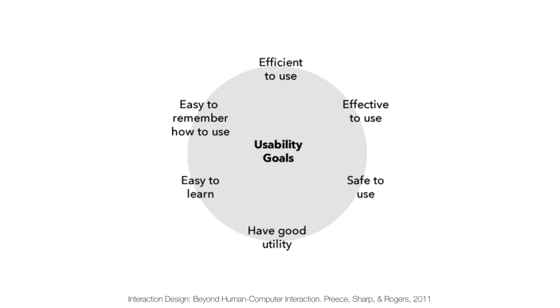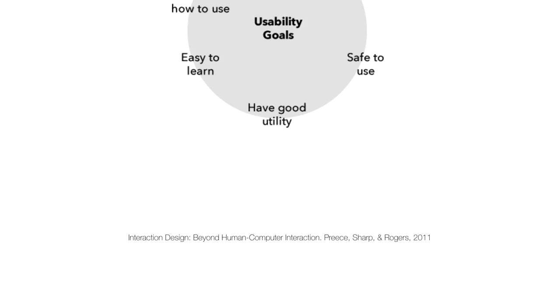The trick with usability is to start early in the design process. There are a number of good usability goals I like to use as a checklist when developing an app — this comes from the book Interaction Design: Beyond Human-Computer Interaction. The goals are: make sure your app is efficient to use, effective to use, safe to use, has good utility, is easy to learn, and easy to remember how to use.